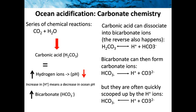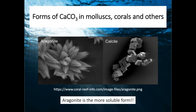In an ocean acidification scenario, because of these extra hydrogen ions and bicarbonate ions being produced, calcifiers are under threat. There are two different forms of calcium carbonate found in mollusks, corals, and other animals, as well as in phytoplankton such as coccolithophores. These two forms are called aragonite and calcite. Aragonite is much less stable than calcite, so its dissolution is likely to happen faster.